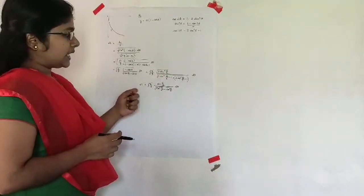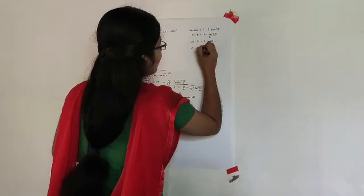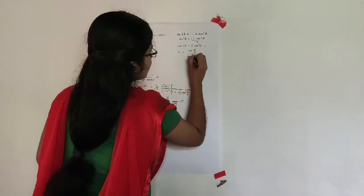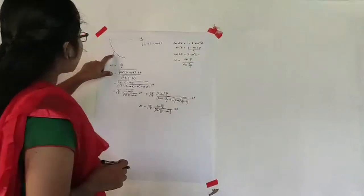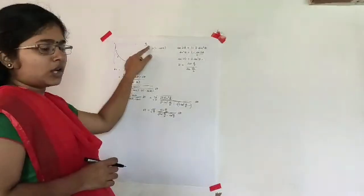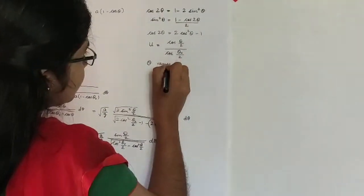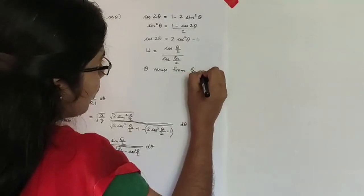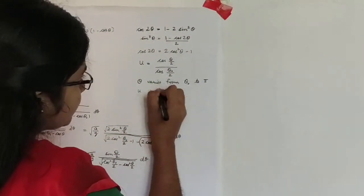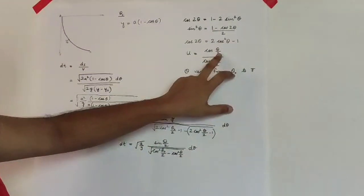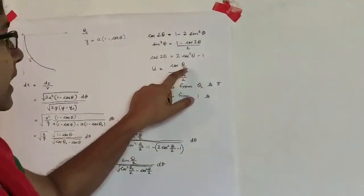We make the substitution u = cos(θ/2) / cos(θ₀/2). We change the limits of integration: θ varies from θ₀ to π. When θ = θ₀, u = cos(θ₀/2)/cos(θ₀/2) = 1. When θ = π, u = 0. So the limit of u is from 1 to 0.